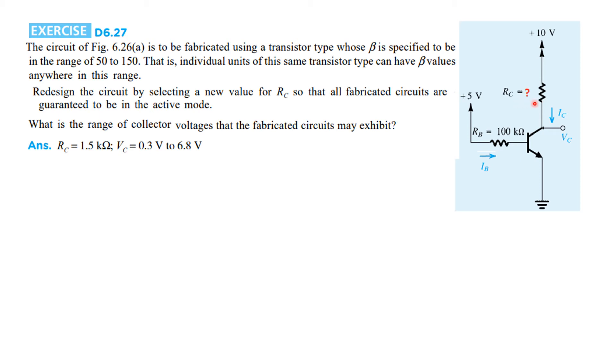What we have to do is design the circuit by selecting a new value of RC so that all fabricated circuits are guaranteed to be in active mode. The next part is: what is the range of collector voltages that the fabricated circuits may exhibit? We have to find the value of VC for different βs. Again, we'll keep in mind that for active mode, VCE has to be greater than or equal to 0.3 volts.